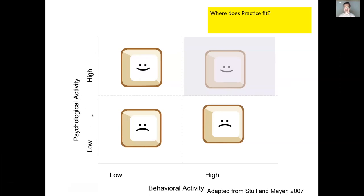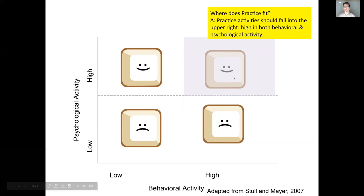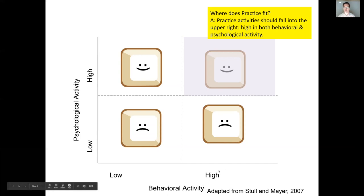One thing that practice does to differentiate it from passive learning situations like reading a textbook or watching a lecture is that we get to observe behavior as students answer practice questions. So certainly it's high in behavior, and we hope good practice activities should be high in psychological activity relevant to the learning goal — therein is often the design challenge. Just because it's high in behavioral activity doesn't always mean you get low psychological activity with respect to the learning goals.